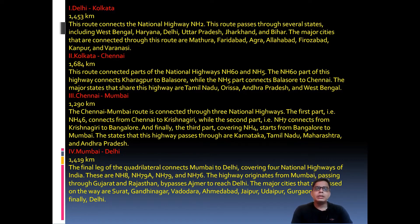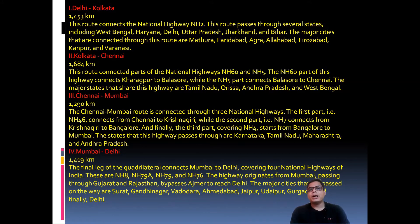The Kolkata to Chennai segment has a length of 1,684 kilometers. This route connects via NH 60 and NH 5. NH 60 connects Kharagpur to Balasore, which is located in Odisha, while NH 5 connects Balasore to Chennai. The major states covered by this segment are Tamil Nadu, Odisha, Andhra Pradesh, and West Bengal.